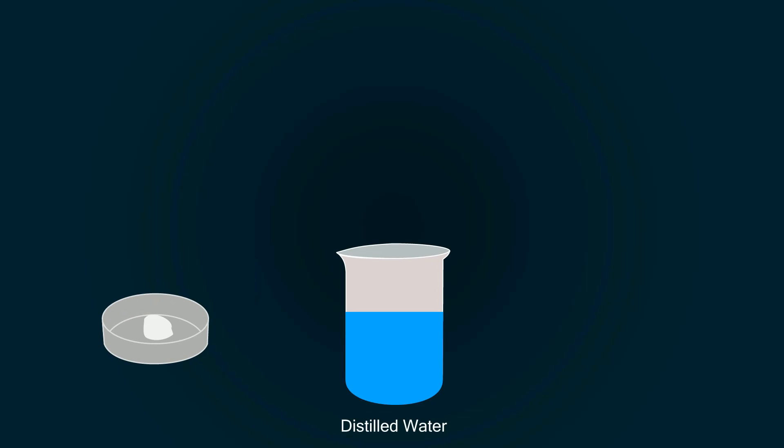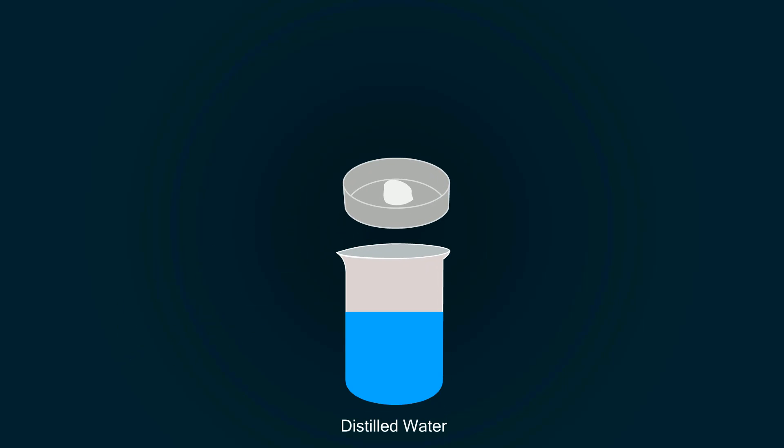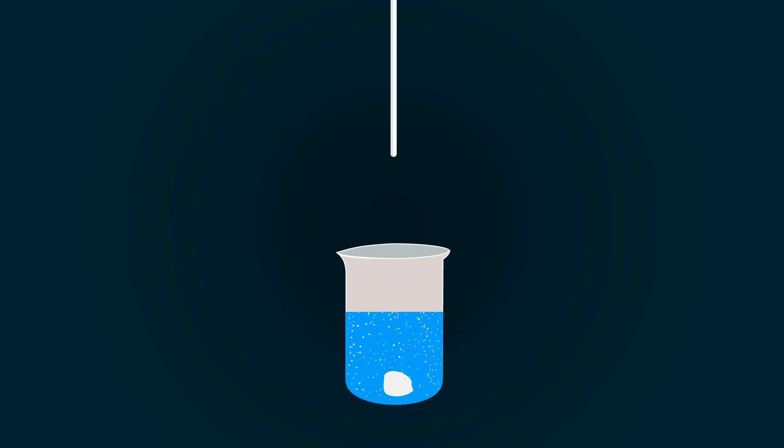Now add the silver nitrate into the distilled water. Mix it with the stirrer to make a homogenous mixture.